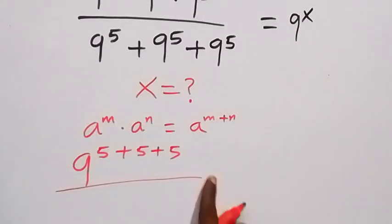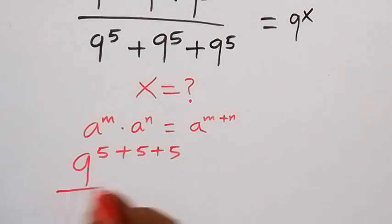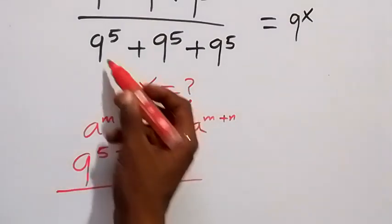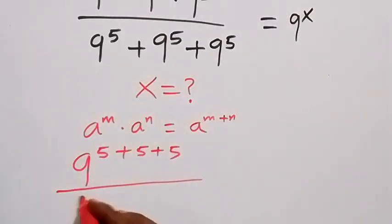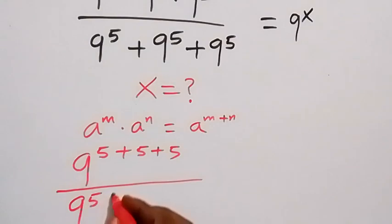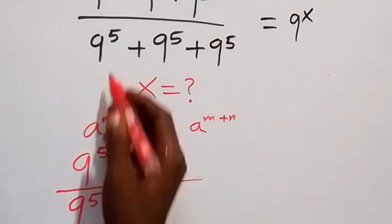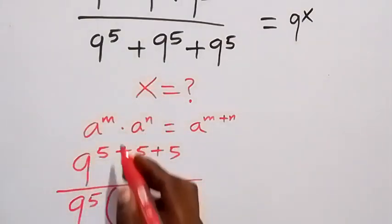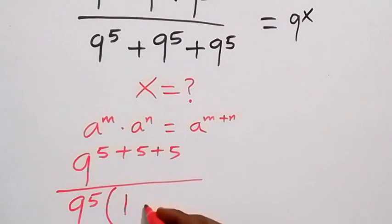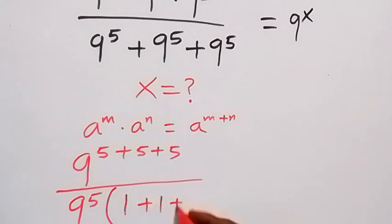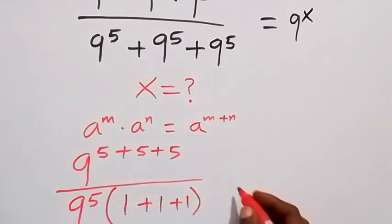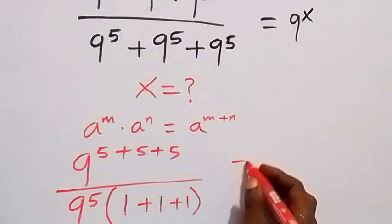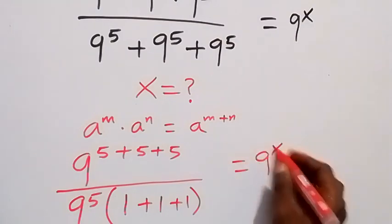For the denominator, we factor n raised to power 5 out, and this becomes n raised to power 5 times the bracket where we take n raised to power 5 out, leaving 1 plus 1 plus 1, which equals 9 raised to power x.